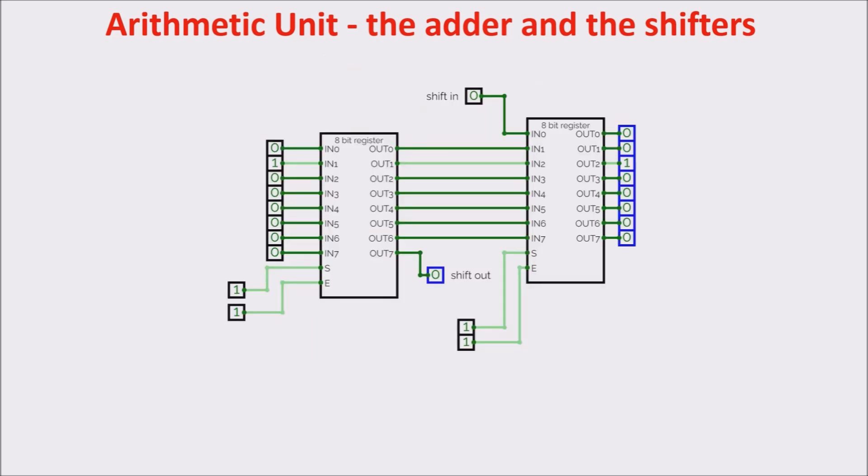Here you can see the left shifter. It is done using two registers and leaving set and enable inputs to one. In this way, we have the output immediately after the arrival of the inputs. The byte 00000010 is left shifted to 00000100. Note that the starting byte corresponds to the decimal number 2 and the shifted one to the number 4. So, left shifting of one position is like multiplying by 2, shifting of two positions is like multiplying by 4, and so on. Shifter is important in multiplication. Note that we also have the carry here.